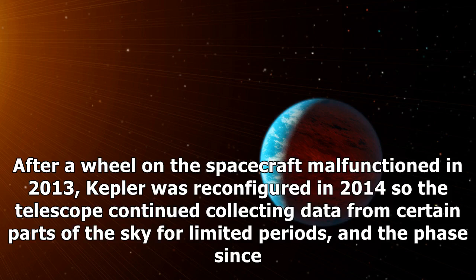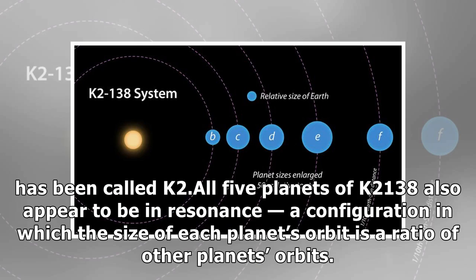After a wheel on the spacecraft malfunctioned in 2013, Kepler was reconfigured in 2014 so the telescope continued collecting data from certain parts of the sky for limited periods, and the phase since has been called K2.